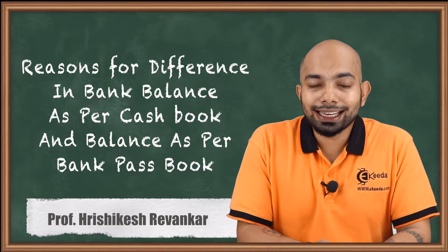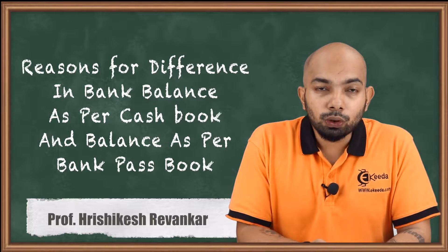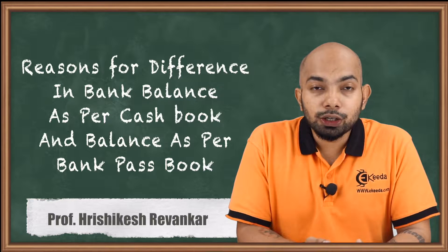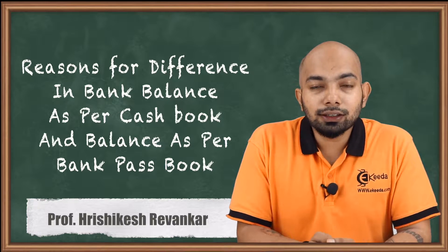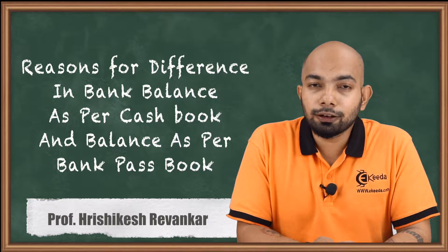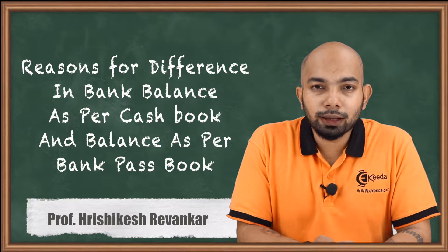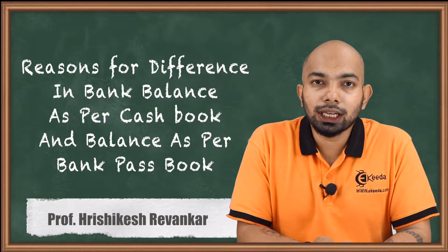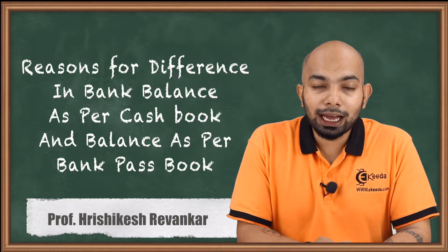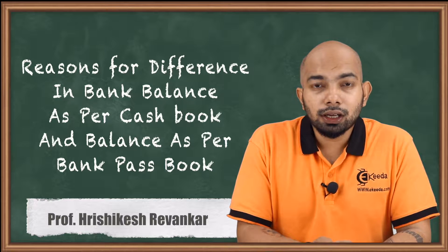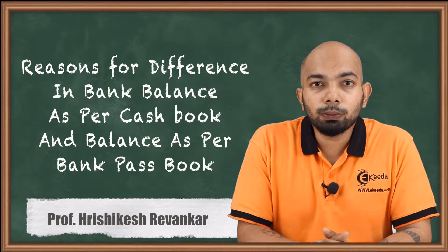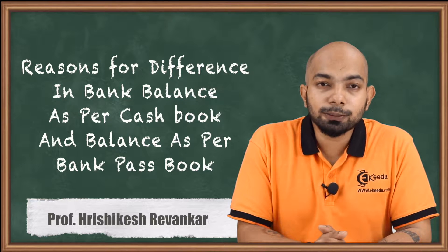If you remember, there was an example shared in the previous lecture. The owner of the company, Mr. A, has a certain amount in his cash book and based on that balance he gives out a check for withdrawal. However, the branch manager confirms that the balance in his account is not sufficient to withdraw that amount. Hence Mr. A visits his chartered accountant, who confirms that a bank reconciliation statement is needed to find out the reasons. Now these reasons will be classified in this lecture.